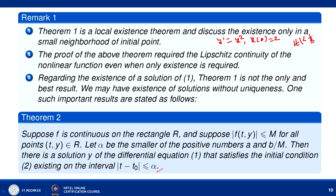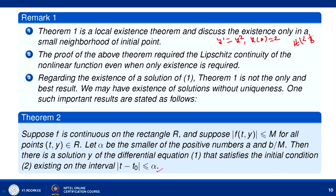The important result is: suppose f is continuous on the rectangle R, and |f| is bounded by some constant M for all points (t, y) in R. Let α be the smaller of the positive numbers a and b/M, as we have already defined for the rectangle. Then there is a solution y of the differential equation satisfying the initial condition, existing on the interval |t - t₀| ≤ α. The only difference from the previous existence and uniqueness theorem is that here we have not assumed that f(t,y) satisfies the Lipschitz condition.